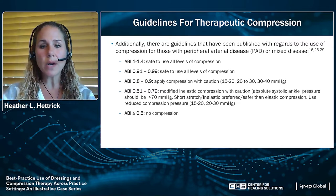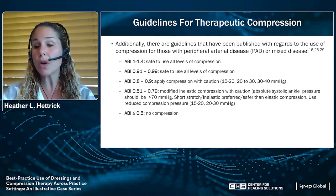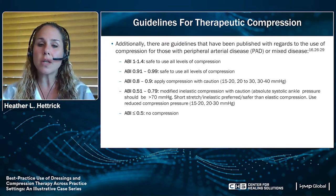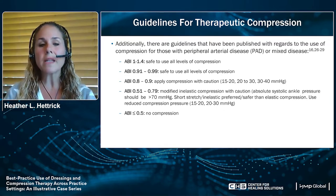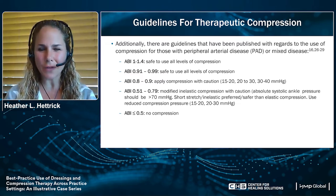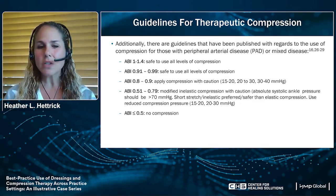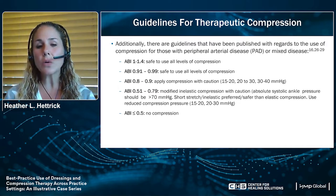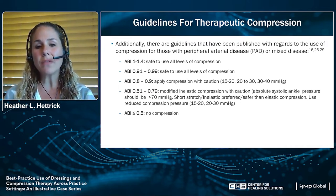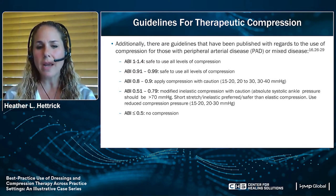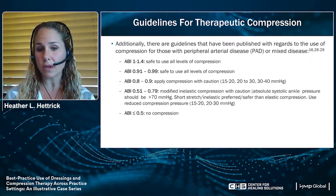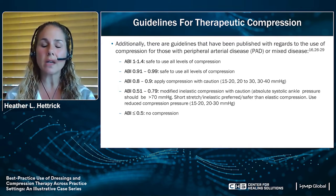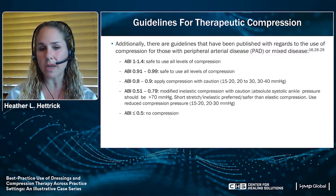There are guidelines published regarding compression for patients with associated peripheral arterial disease or mixed disease — a combination of venous and arterial disease. Doing an ankle brachial index or referring out for a vascular workup is essential. An ABI lower than 0.8 requires caution with compression application, and an ABI of 0.5 warrants further investigation and modification of compression to avoid causing further damage to the underlying arterial disease.